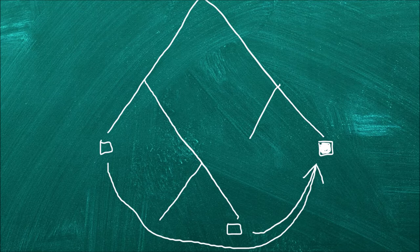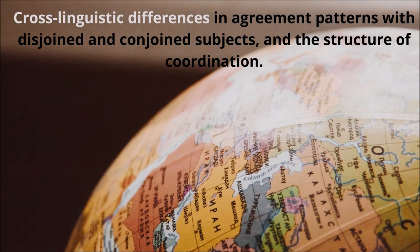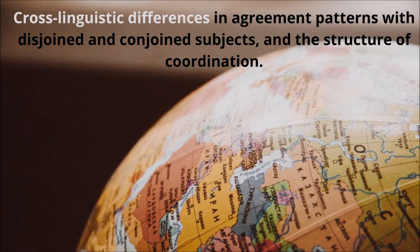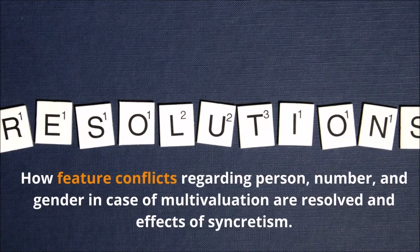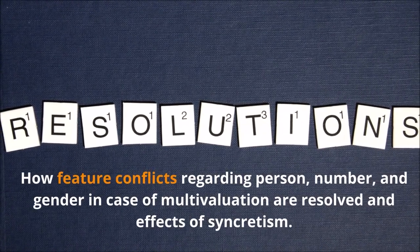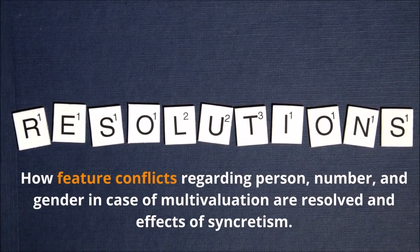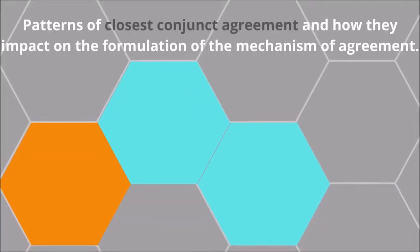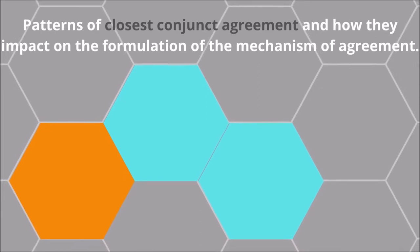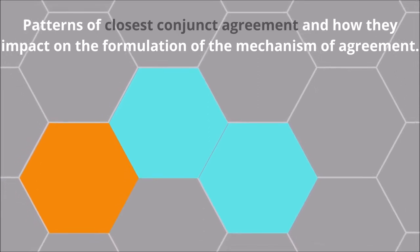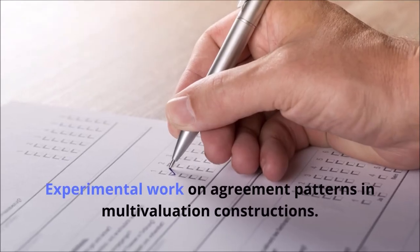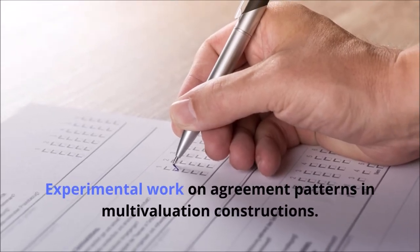Among others, the talks in our workshop investigate the following topics: cross-linguistic differences in agreement patterns with disjoint and conjoint subjects and the structure of coordination; how feature conflicts regarding person, number and gender in case of multivaluation are resolved and effects of syncretism; patterns of closest conjunct and highest conjunct agreement and how they impact on the formulation of the mechanisms of agreement; and experimental work on agreement patterns and multivaluation constructions.